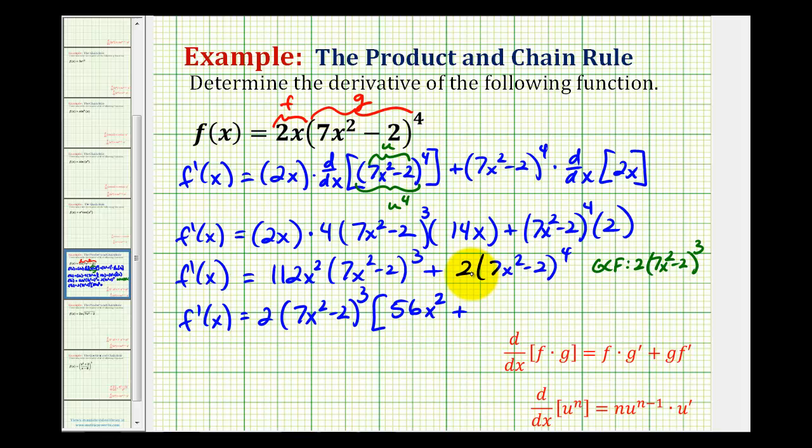And then on the second product, we're factoring out the 2 and only 3 factors of 7x squared minus 2. So we're left with one factor of 7x squared minus 2. And the last step is to combine like terms. Notice how here we have 2x squared terms. So our final derivative is going to be 2 times the quantity 7x squared minus 2 to the third times. Here we'll have 63x squared minus 2. And this would be the factored form of our derivative.